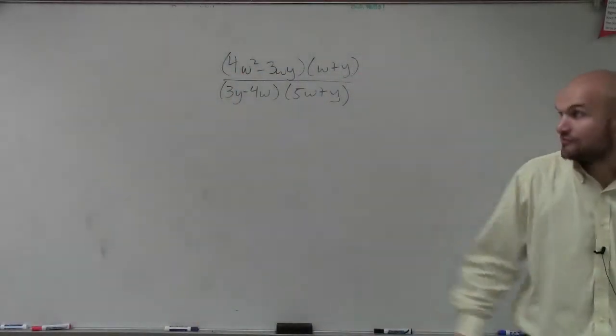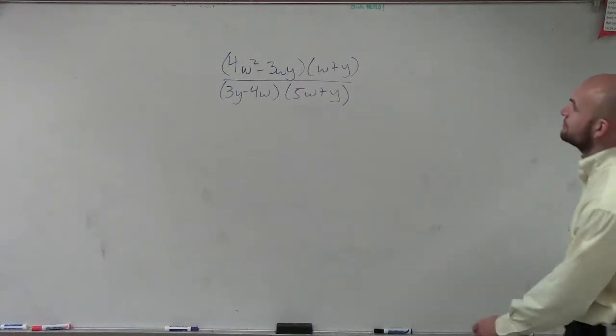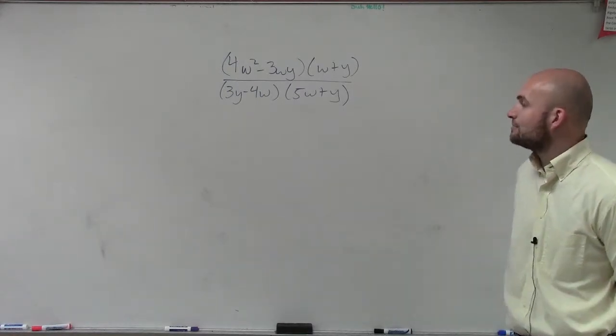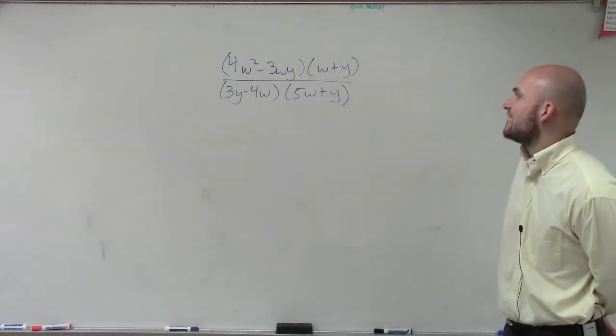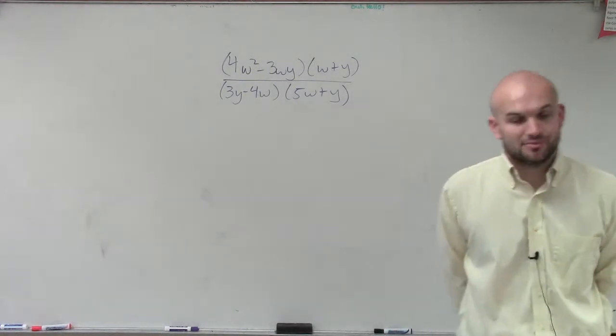So what I have here, ladies and gentlemen, is I have 4y squared minus 3y, 3wy, times 12y plus 2, divided by 3y minus 4w, times 5y plus y. 5w plus y.